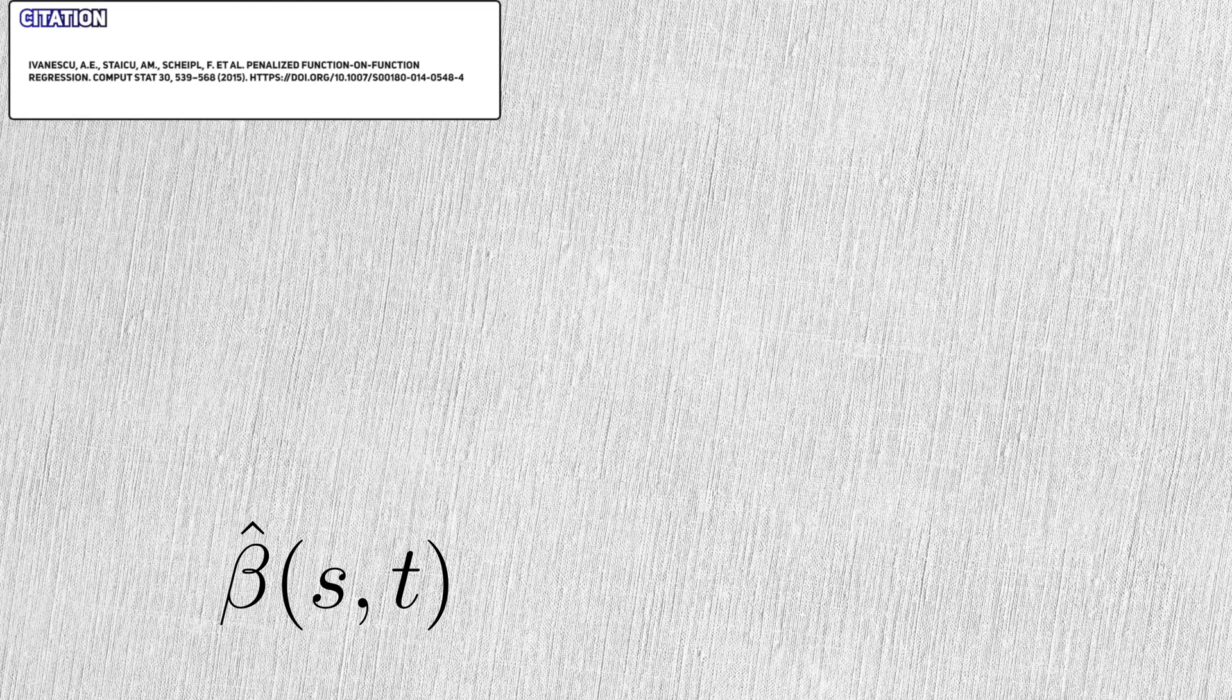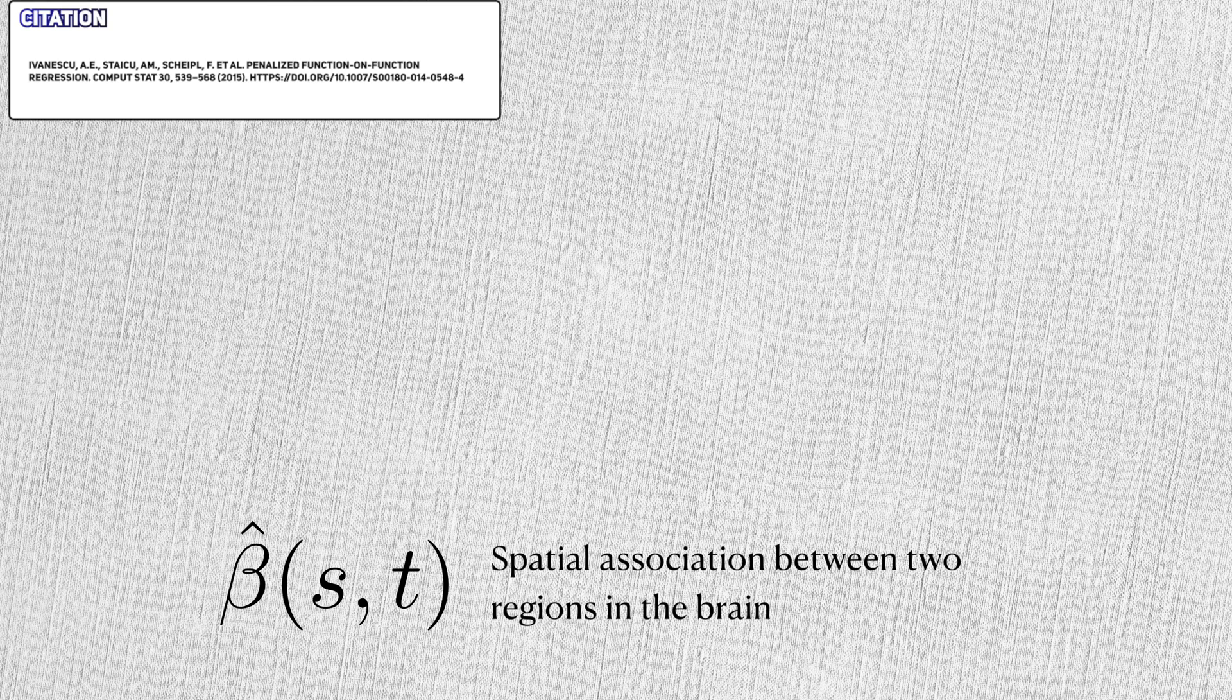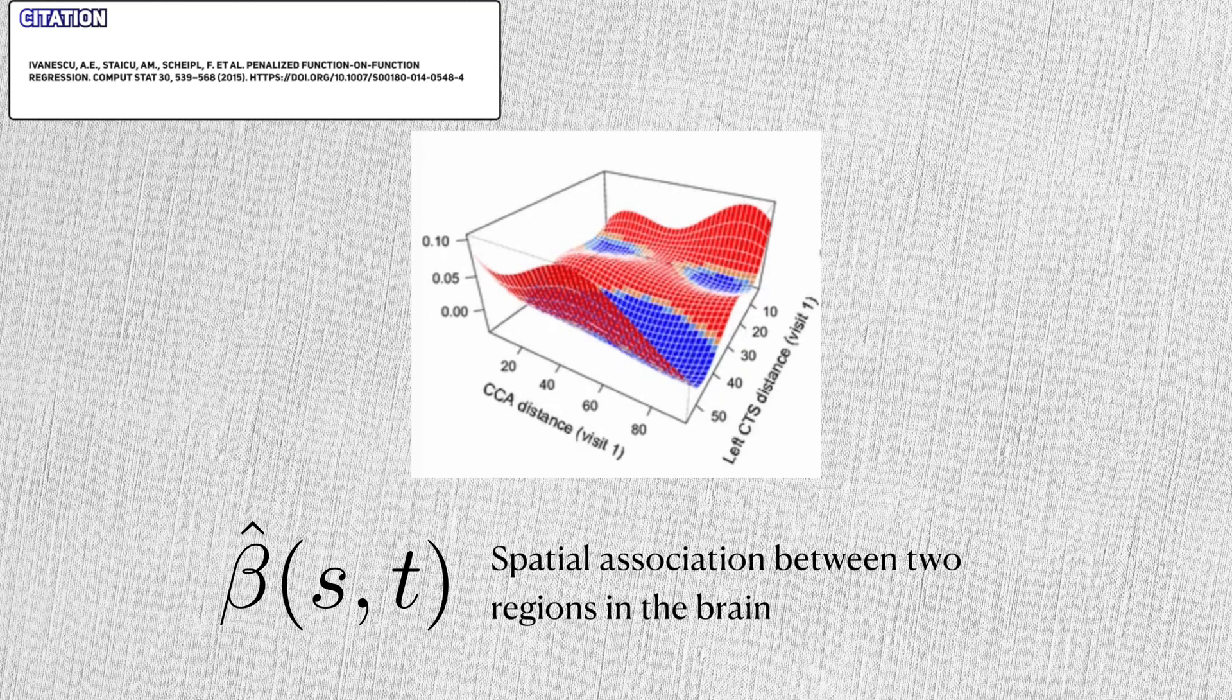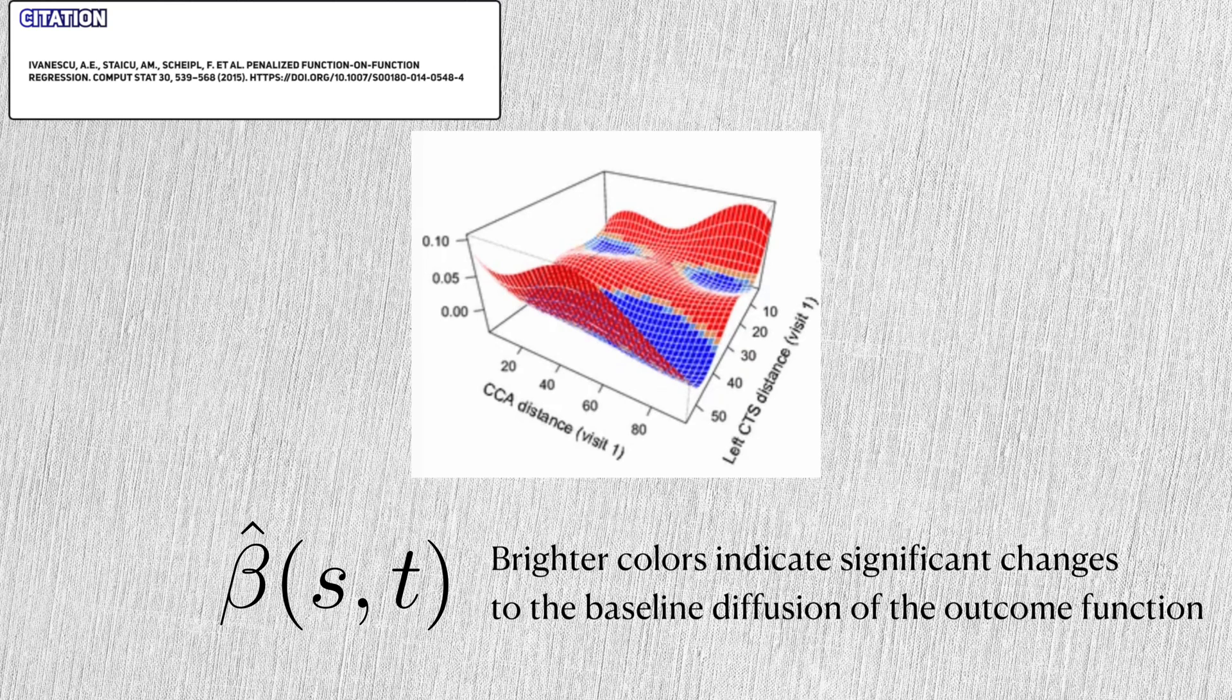In this case, the coefficient surface in the regression represents a kind of spatial association between two regions in the brain. And here's the estimated coefficient surfaces found by the researchers. These regions with dark and red colors are regions that were significantly associated with changes to the baseline function. In other words, changes in diffusion activity in one part of the brain are significantly associated with changes in other regions of the brain.